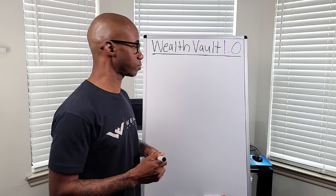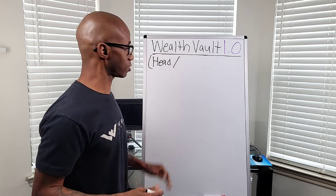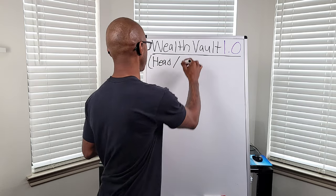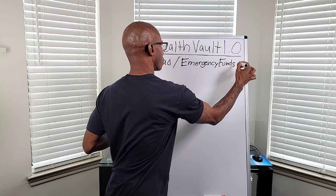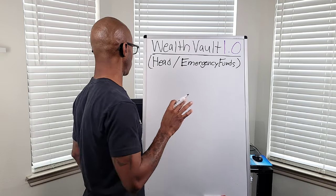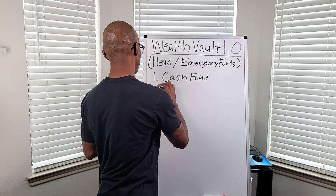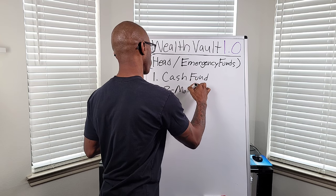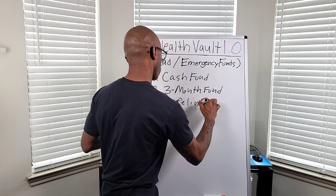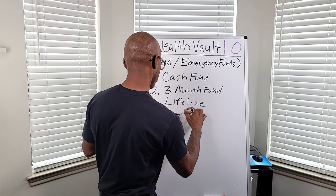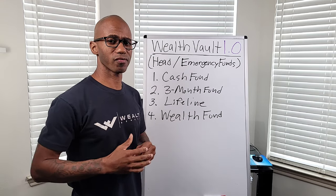We're going to start with the head of the system, which is WealthBowl 1.0. It consists of three emergency funds, and those emergency funds consist of four different accounts: one, the cash fund; two, the three-month fund; three, the life fund; and four, the wealth fund. And that's the complete WealthBowl 1.0 system.